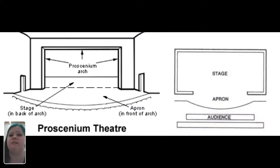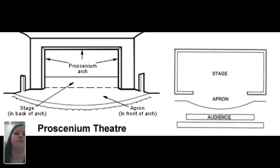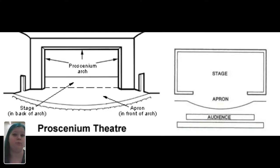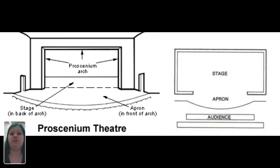The first type of stage we're going to talk about is the most common type: the proscenium stage. If you've ever been in the auditorium here at the middle school, that's the type of stage we have. The proscenium stage gets its name from the proscenium arch, which is used as a framing device to frame the audience's point of view so they don't see things backstage. Proscenium stages have the audience on one side only, and also feature the apron — the part of the stage that comes out in front of the proscenium arch.